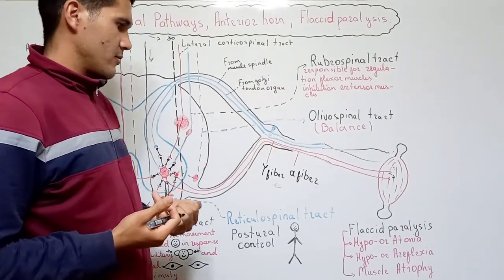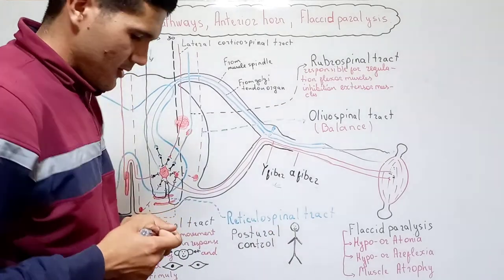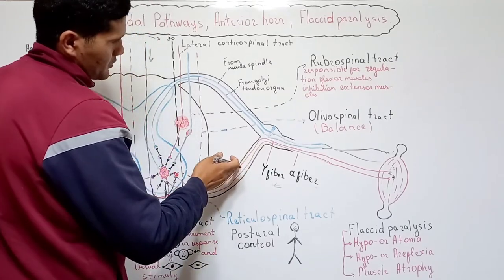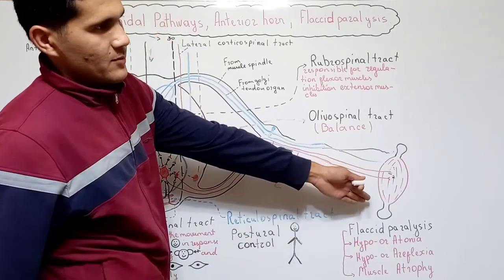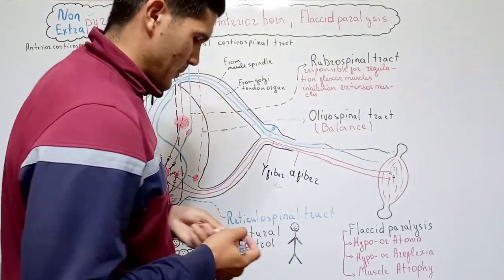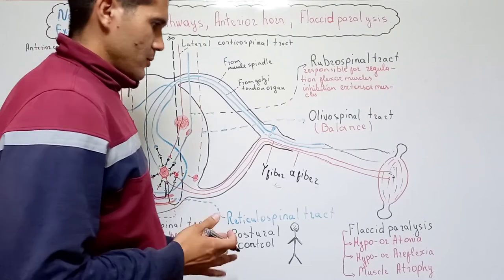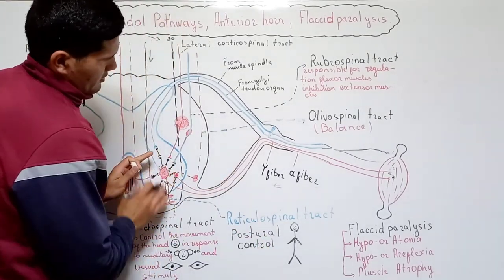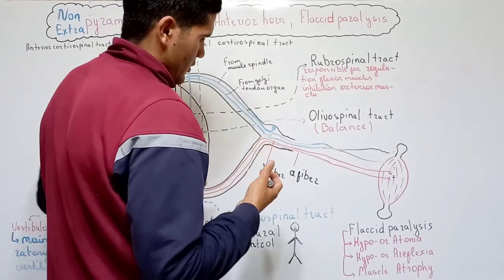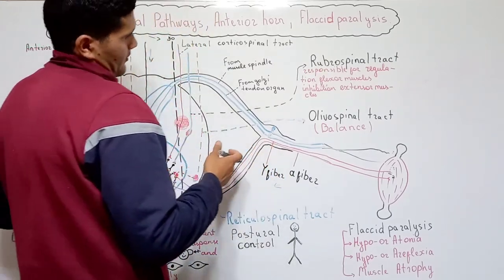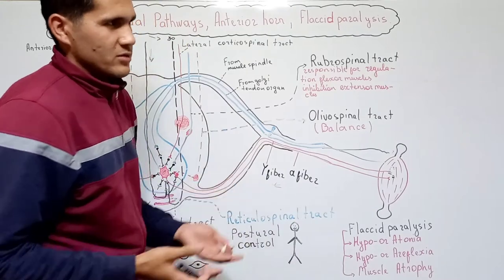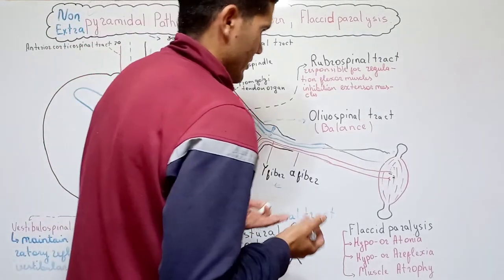Our final topic is flaccid paralysis. Flaccid paralysis can be caused by any damage to the alpha motor neurons, anterior roots, or nerve fibers responsible for contracting muscle groups. There are three main symptoms. The first is hypo- or atonia. Lesions of the alpha motor neurons or fibers at any point can cause a lack of information reaching the muscle. As a result, the muscle cannot respond properly in any position.